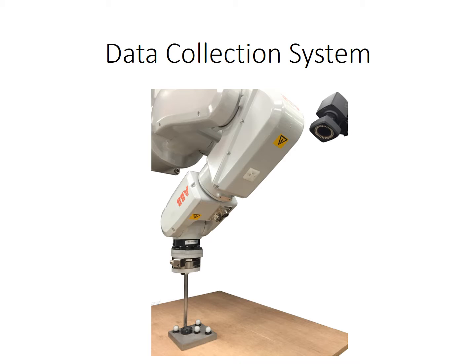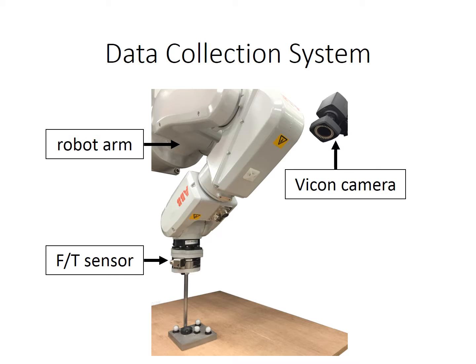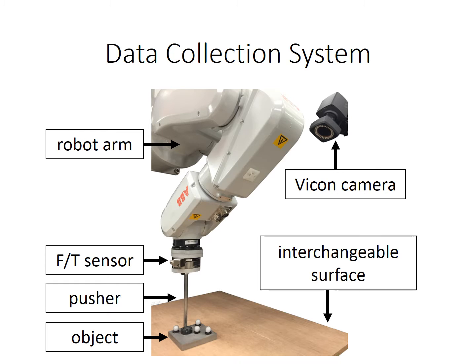Here is our data collection system. We want to collect data accurately and at a high frame rate of 250 Hz. The industrial robot can execute pusher motion accurately in terms of position, velocity, and acceleration. The Vicon cameras track the object pose. The force torque sensor measures the force received on the pusher. The pusher is a metallic cylinder. The object is pushed on an interchangeable surface.